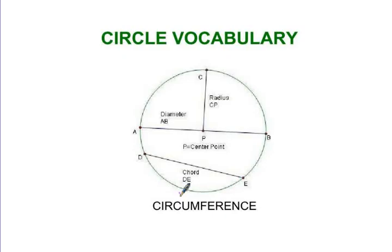Let me tell you the different parts of a circle. First of all, circumference is the distance around the outside edge of a circle.